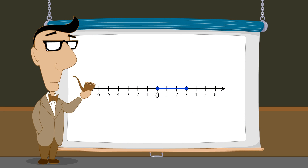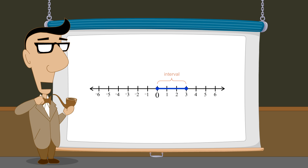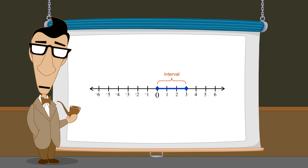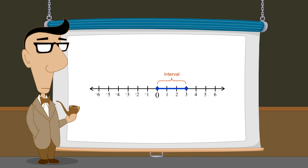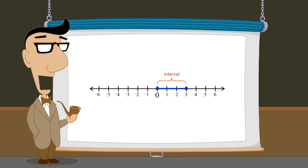This set of numbers forms what is called an interval. An interval is a set whose members are a continuous span of numbers on the number line. Finite intervals are bounded by two endpoints. In this example, the endpoints are zero and three.